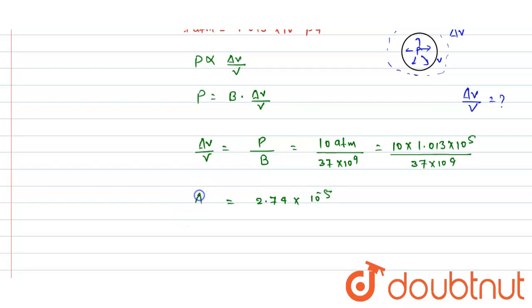So the fractional change delta V/V equals 2.74 × 10^-5. This is the answer. There is no unit here since delta V/V is dimensionless. Its value is 2.74 × 10^-5.